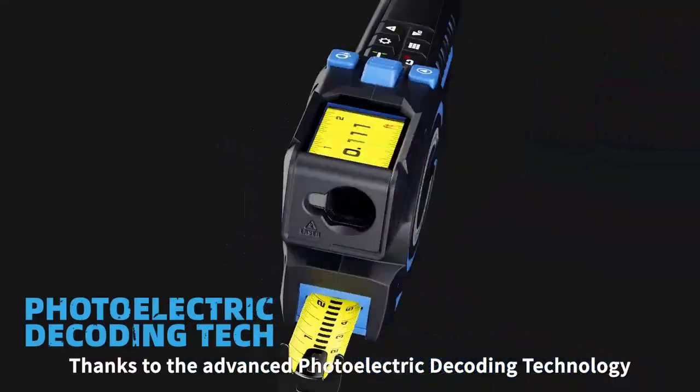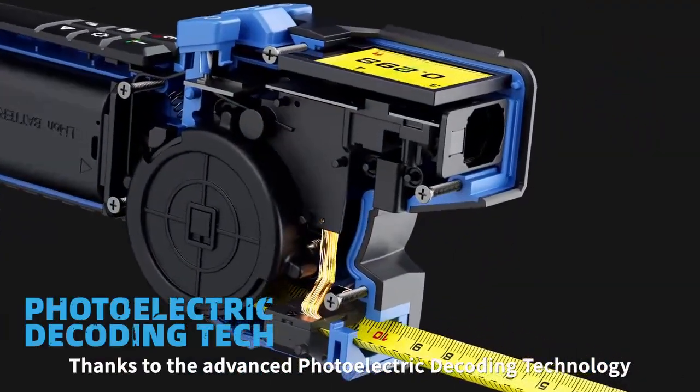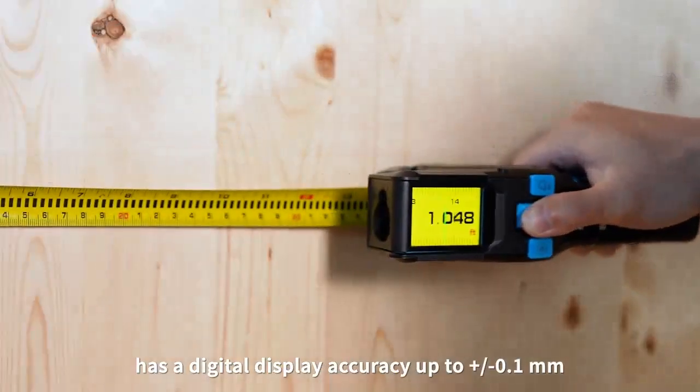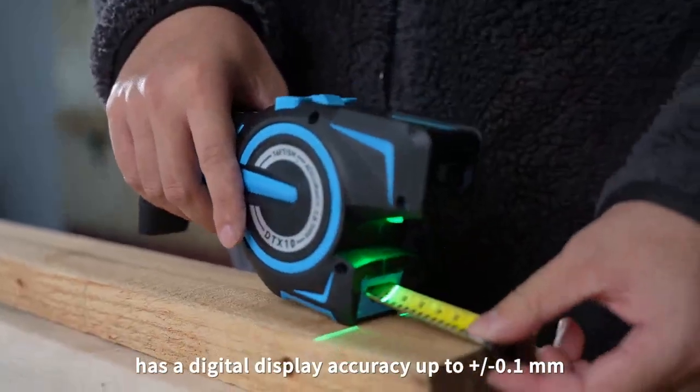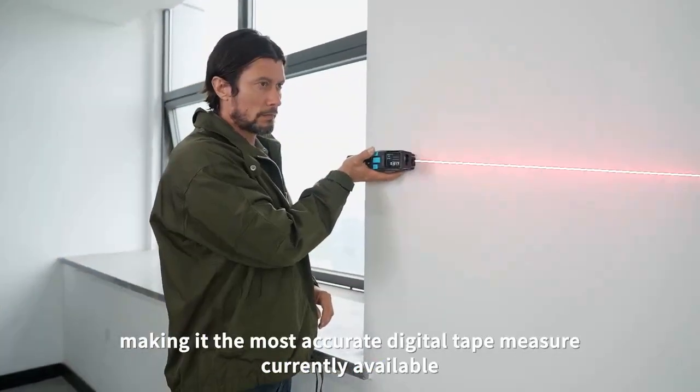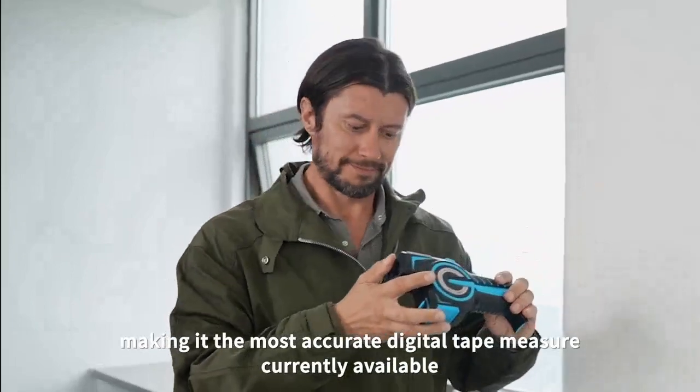Thanks to the advanced photoelectric decoding technology, the SIGAMET DTX-10 has a digital display accuracy up to plus or minus 0.1 millimeters, making it the most accurate digital tape measure currently available on the market.